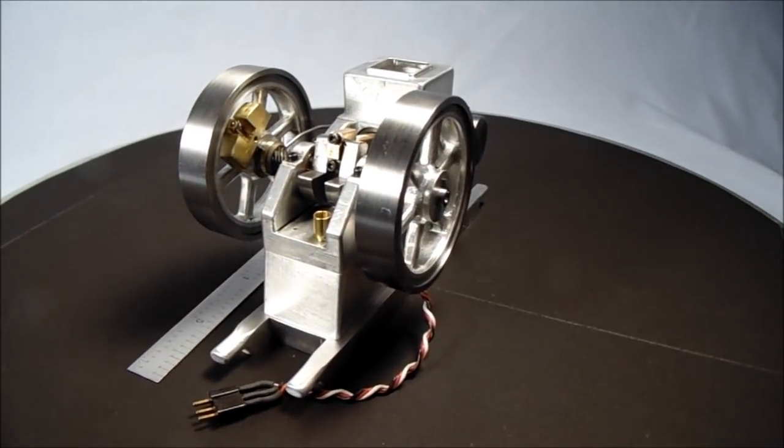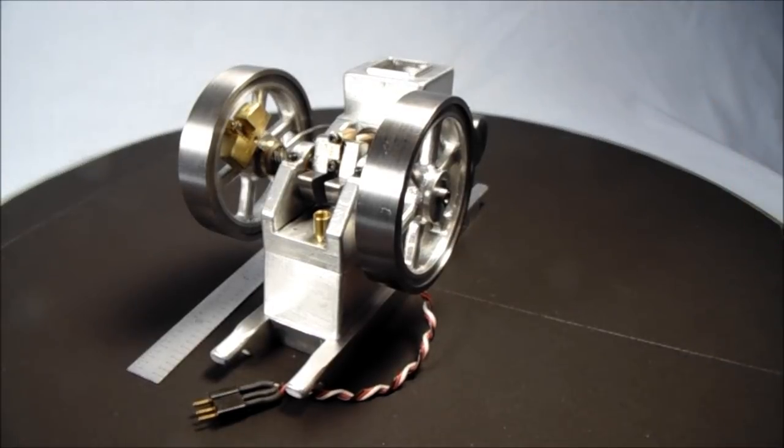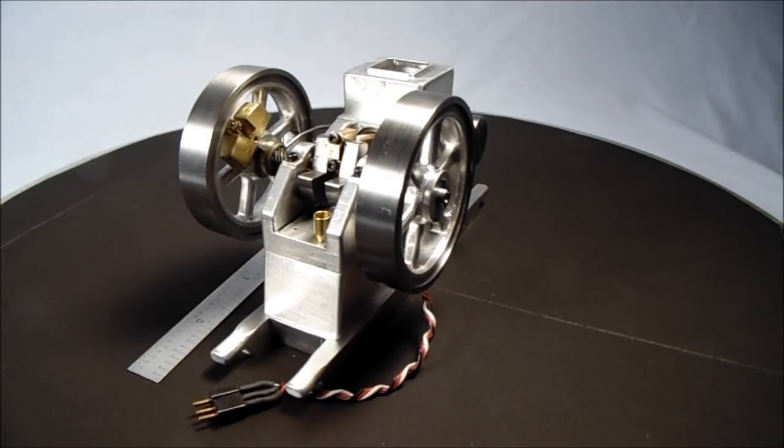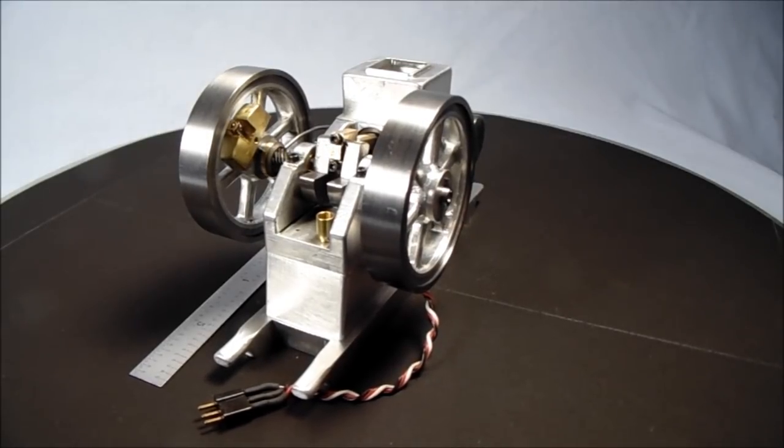The governor is operated by a brass weight that moves eccentrically and moves the lockout shaft which moves the lever that locks out the exhaust valve.